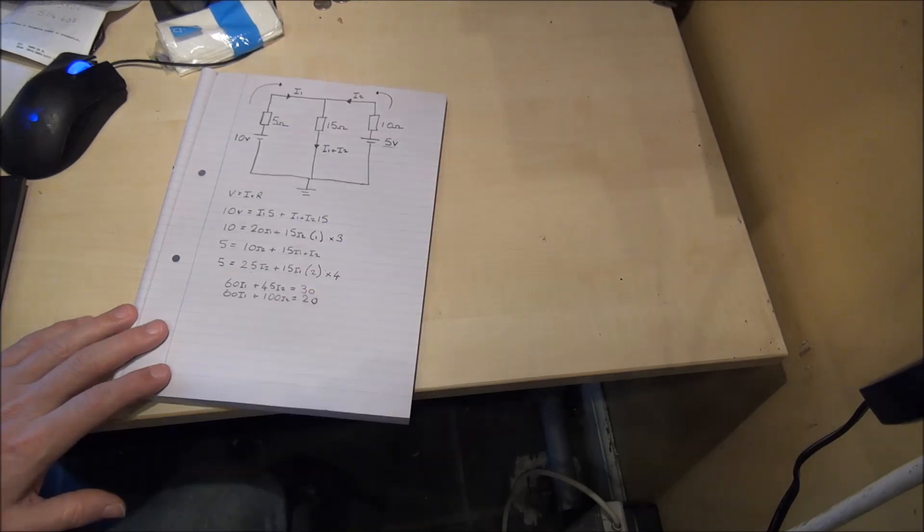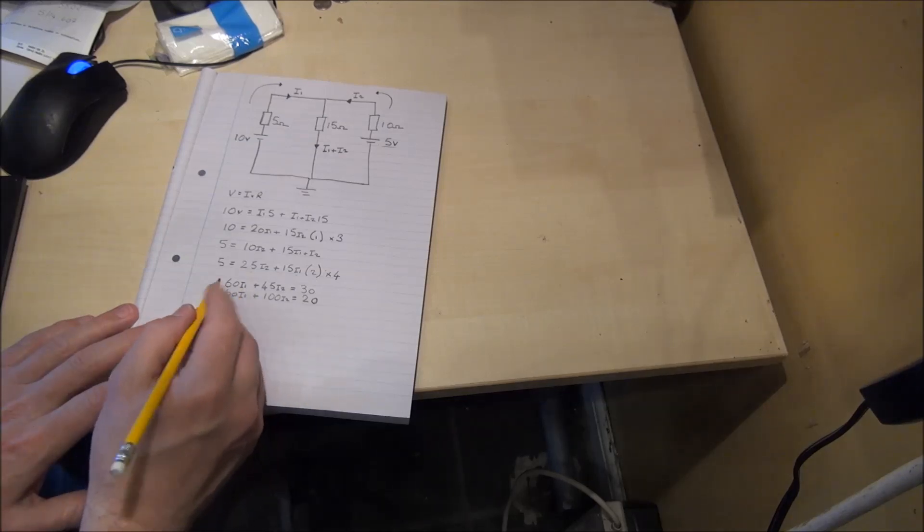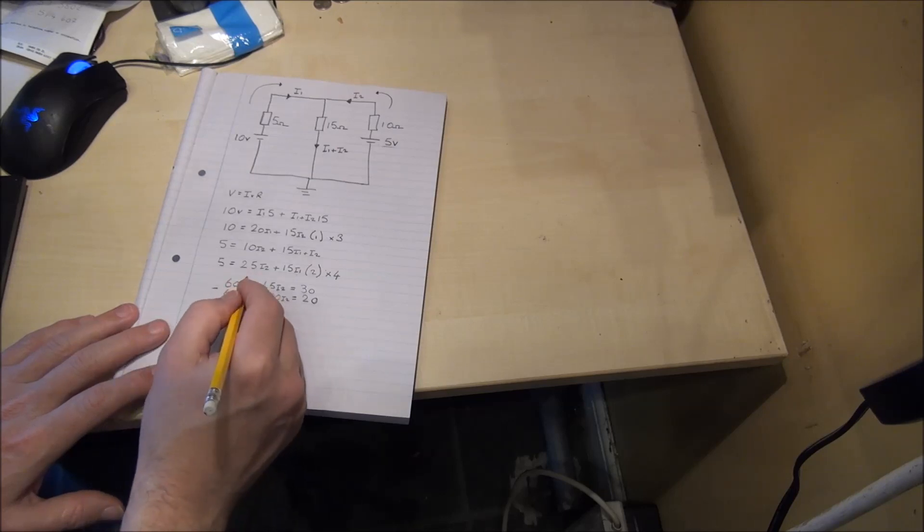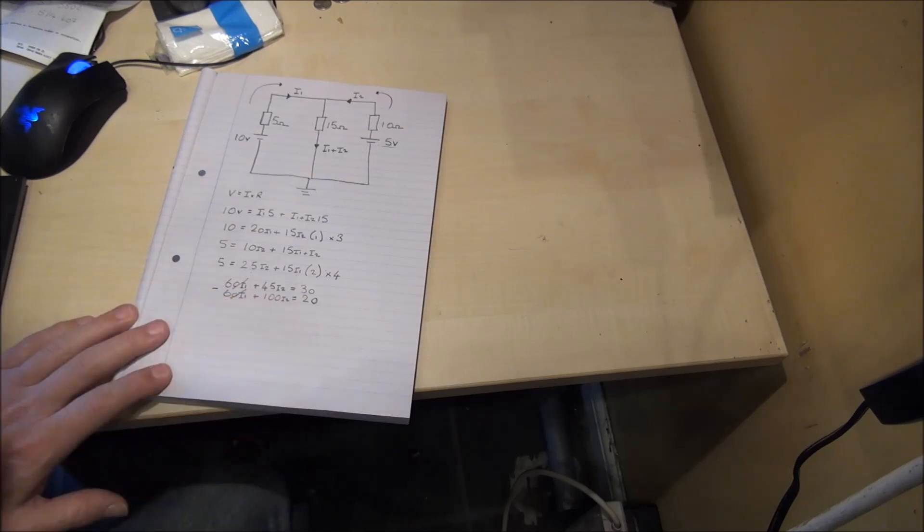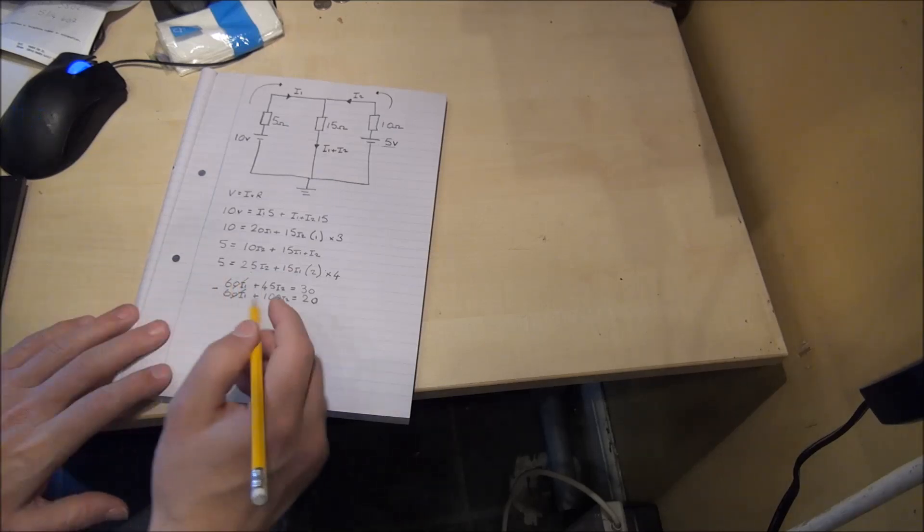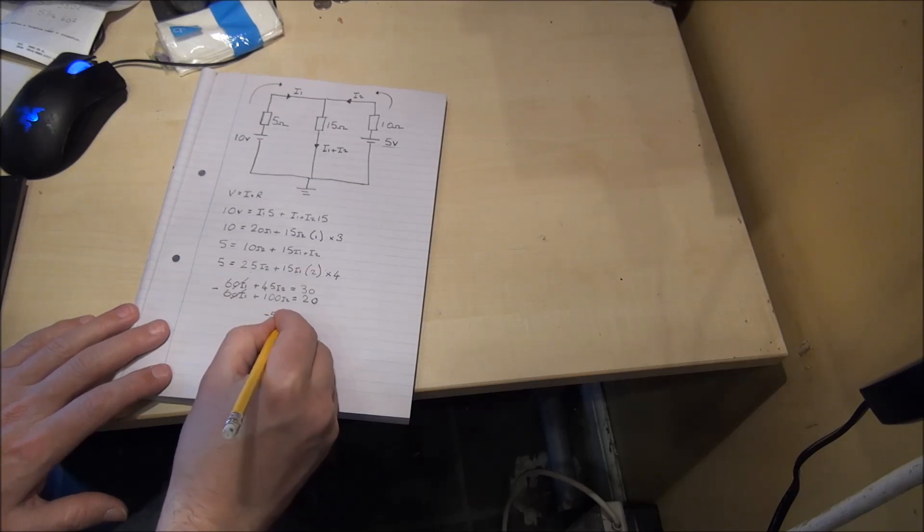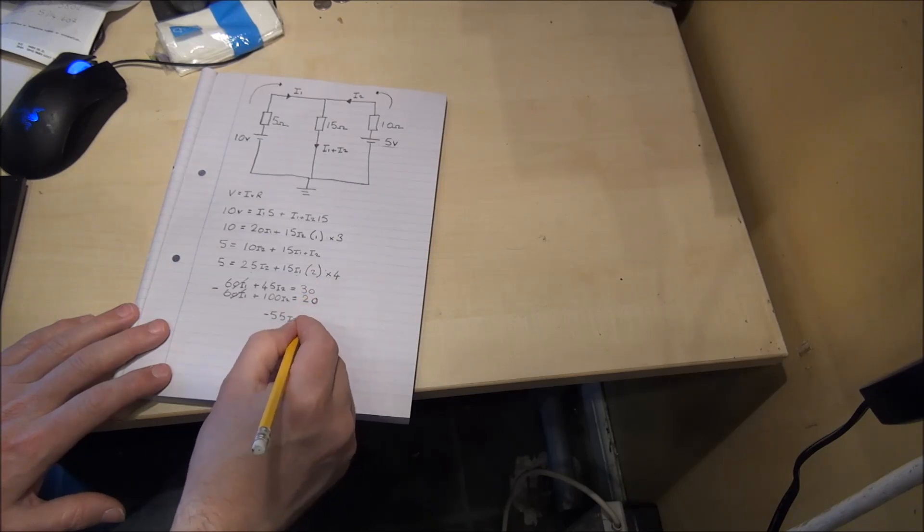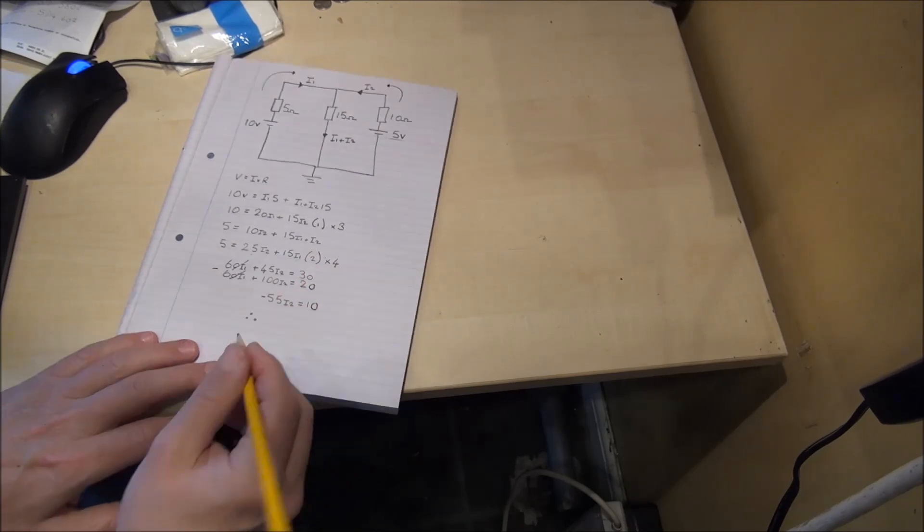We can now eliminate the term I1 by subtracting the bottom equation from the top. 60 I1 minus 60 I1 is 0. So I1 cancels out. 45 I2 minus 100 I2 is equal to minus 55 I2 and 30 minus 20 is equal to 10. Therefore,